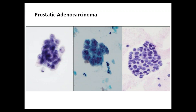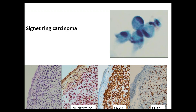The diagnosis of this case was signet ring cell carcinoma — the patient had a history of signet ring cell type poorly differentiated adenocarcinoma of the rectum that had invaded the urinary bladder. The bladder biopsy showed benign urothelium on the surface with underlying signet ring cell-type cells positive for mucicarmine, CK20, and CDX2 — metastatic or recurrent signet ring cell carcinoma from the rectum involving the bladder.